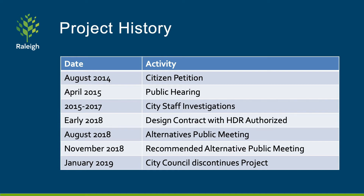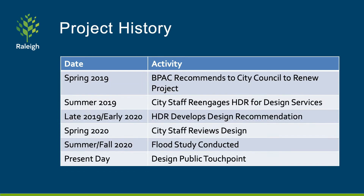In early 2019, the City Council voted to discontinue the project due to public feedback. However, in spring of 2019, the Bicycle and Pedestrian Advisory Commission, BPAC, determined that Oxford Road is strategically important as it facilitates a direct connection between the Five Points area and the Crabtree Creek Greenway. BPAC also felt the sidewalk was important in connecting two nearby schools and Fallon Park.